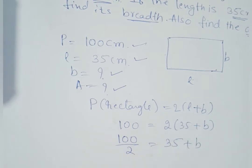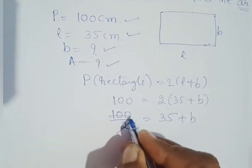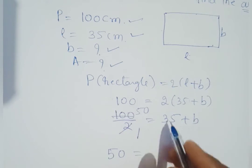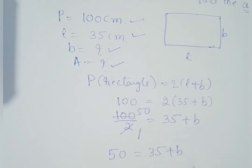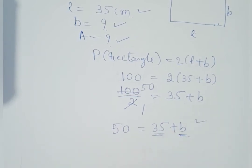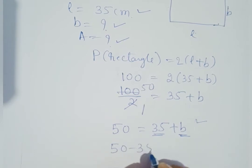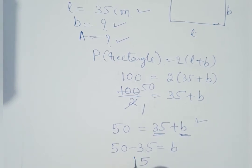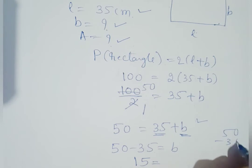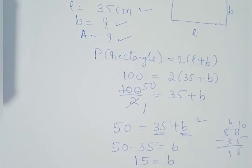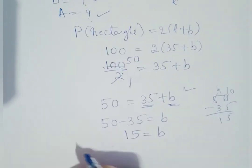So 100 divided by 2 gives us 50, therefore 50 equals 35 plus b. Now transfer 35 to the other side: b equals 50 minus 35, which gives b equals 15. So breadth equals 15 centimeters.